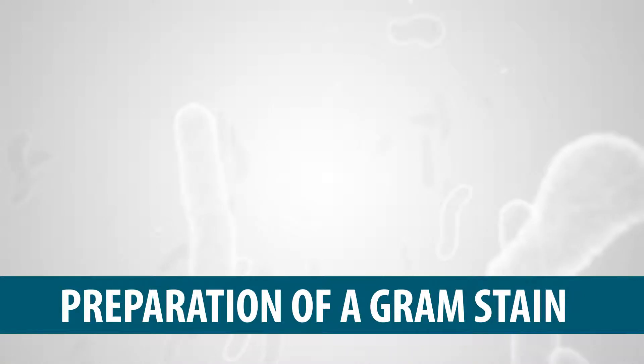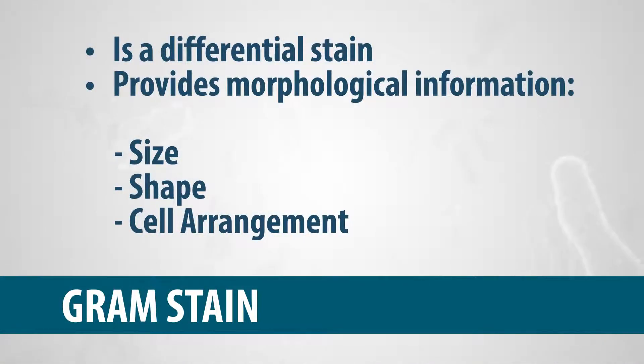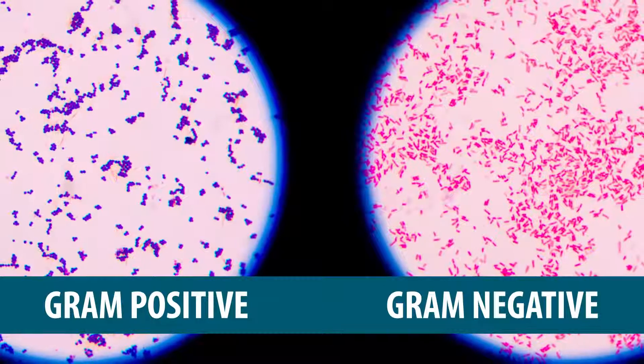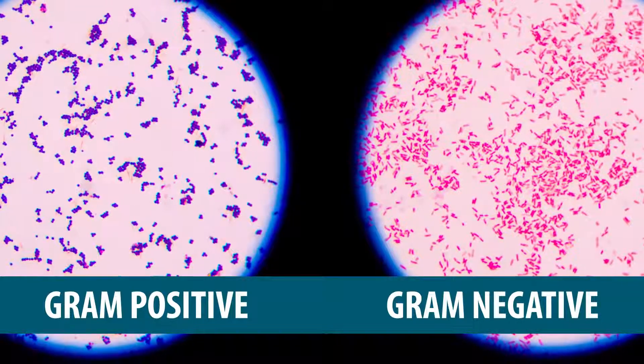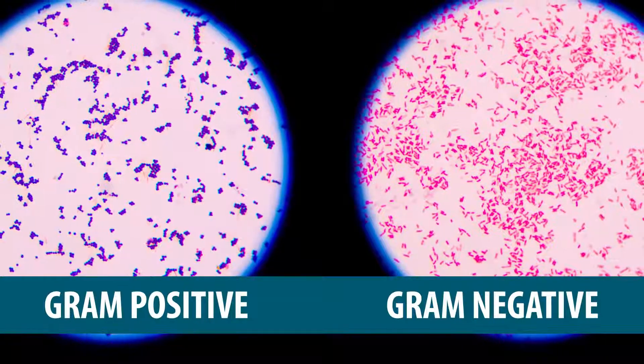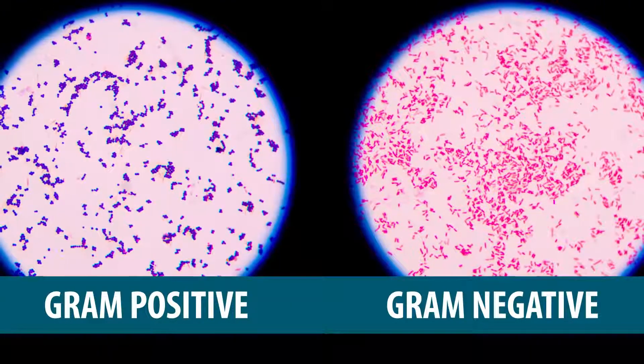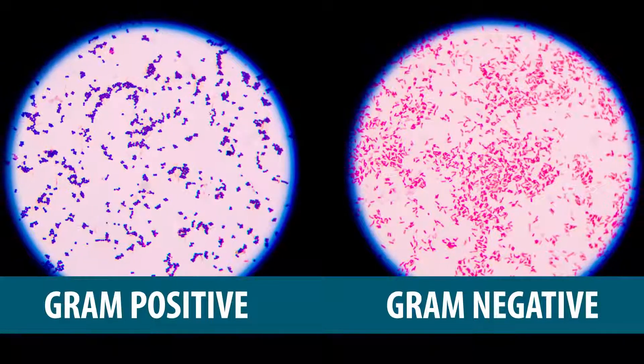Preparation of a Gram Stain. Gram stain is a differential stain. This technique provides not just morphological information such as size, shape, and cell arrangement, but also separates bacteria into two groups, gram-positive and gram-negative, based on differences in the structure of the bacterial cell wall.